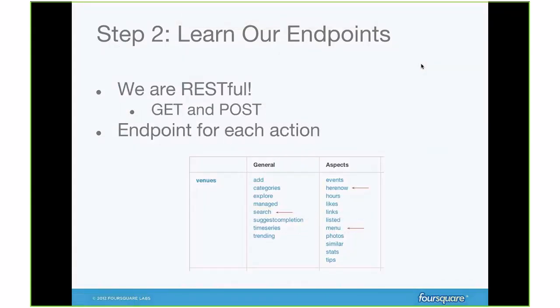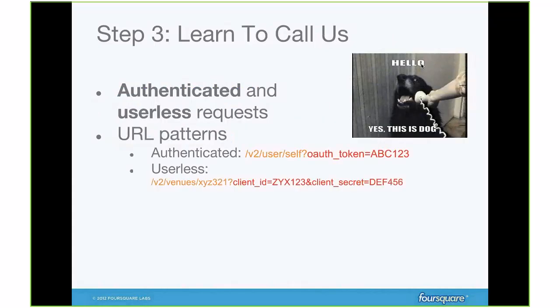We are RESTful and all our responses come back in JSON format. There are two calling patterns with the API: authenticated requests and userless requests. You need authenticated requests if you want any sort of personal data — you authenticate the user through OAuth and get their OAuth token, which allows you to see personalized information. Userless requests don't show personalized information and don't interact with any users, but you can see basic data and do basic searches. Userless is what it sounds like — you don't want to associate this with any user.